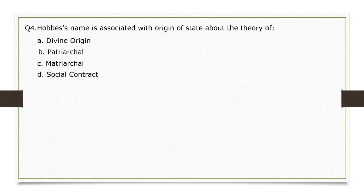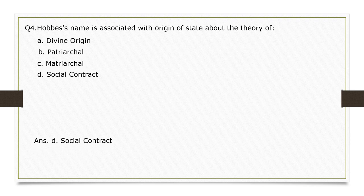Hobbes' name is associated with the origin of state — about which theory? Options are given. The correct option is option D: social contract.